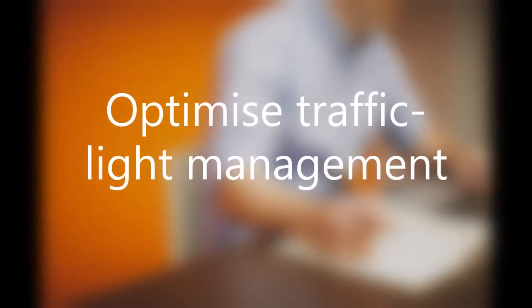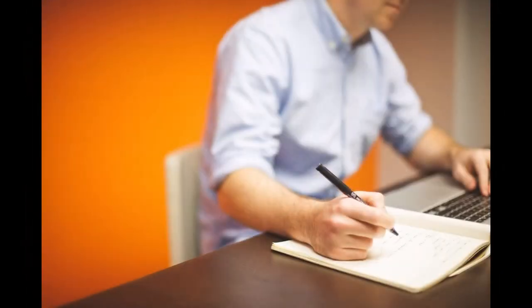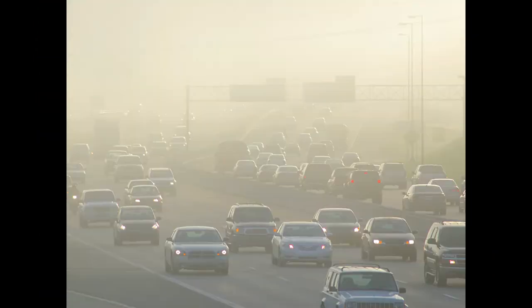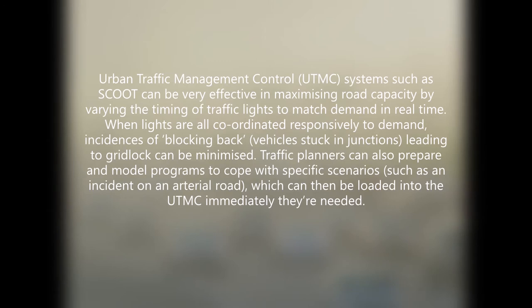Optimize traffic light management. Urban traffic management control systems such as SCOOT can be very effective in maximizing road capacity by varying the timing of traffic lights to match demand in real time. When lights are all coordinated responsively to demand, incidences of blocking back — vehicles stuck in junctions leading to gridlock — can be minimized. Traffic planners can also prepare and model programs to cope with specific scenarios, such as an incident on an arterial road, which can then be loaded into the UTMC immediately when needed.